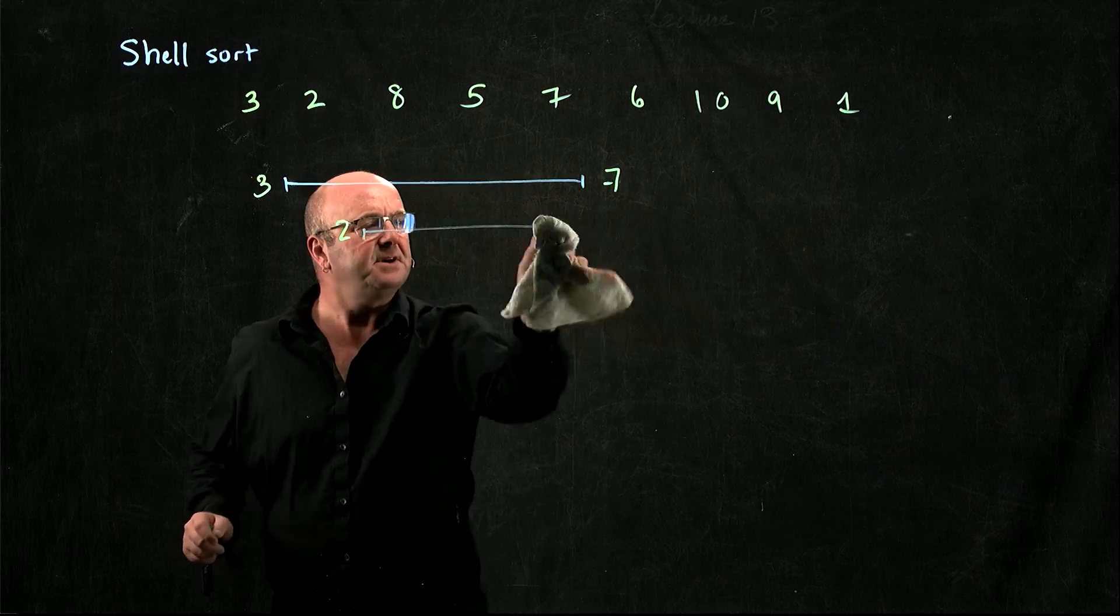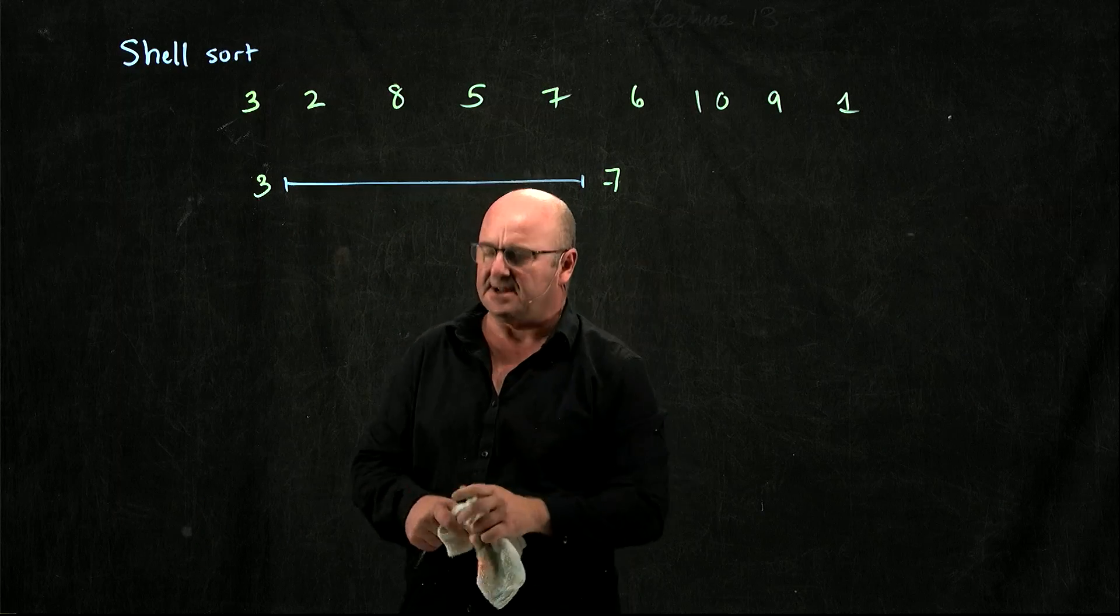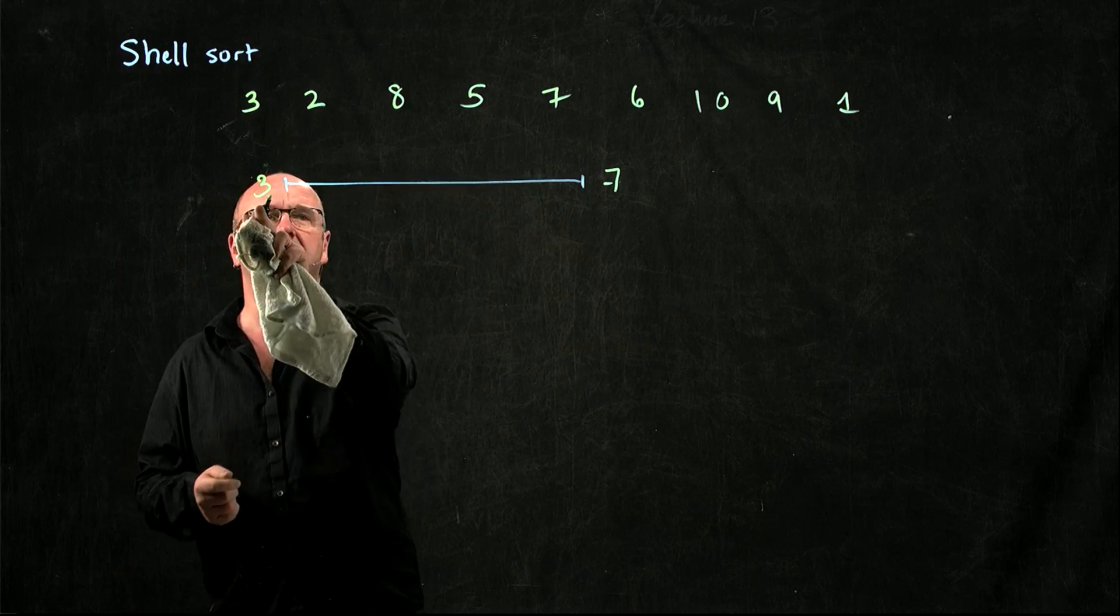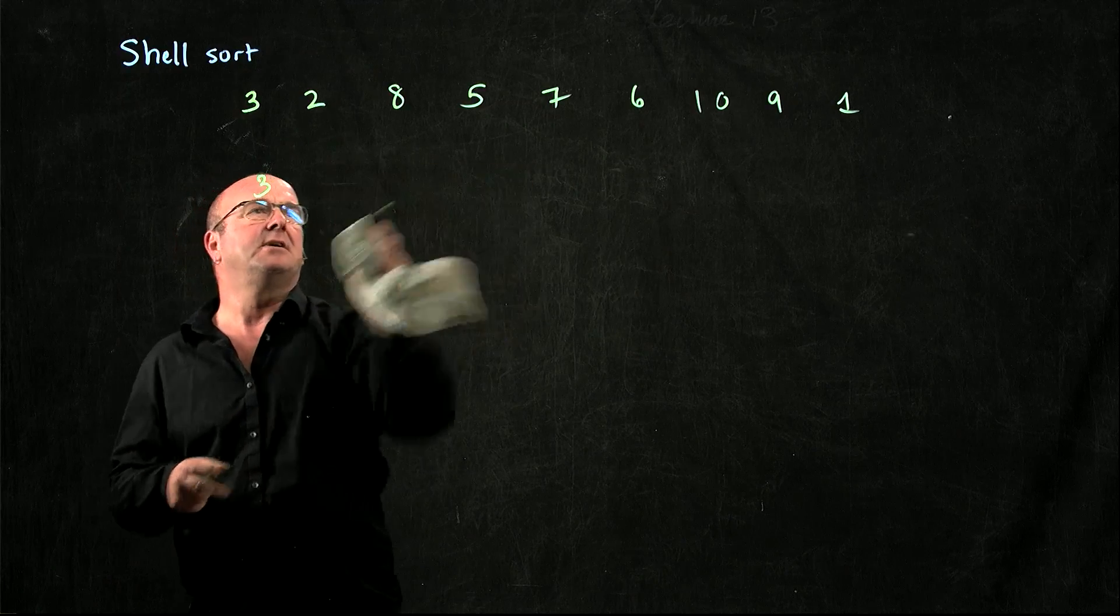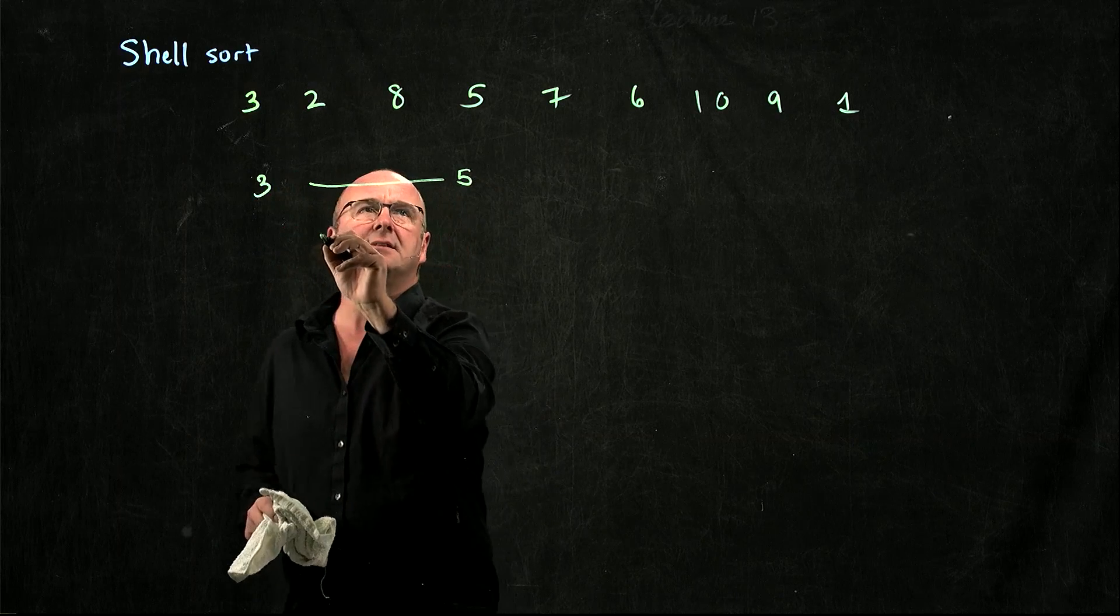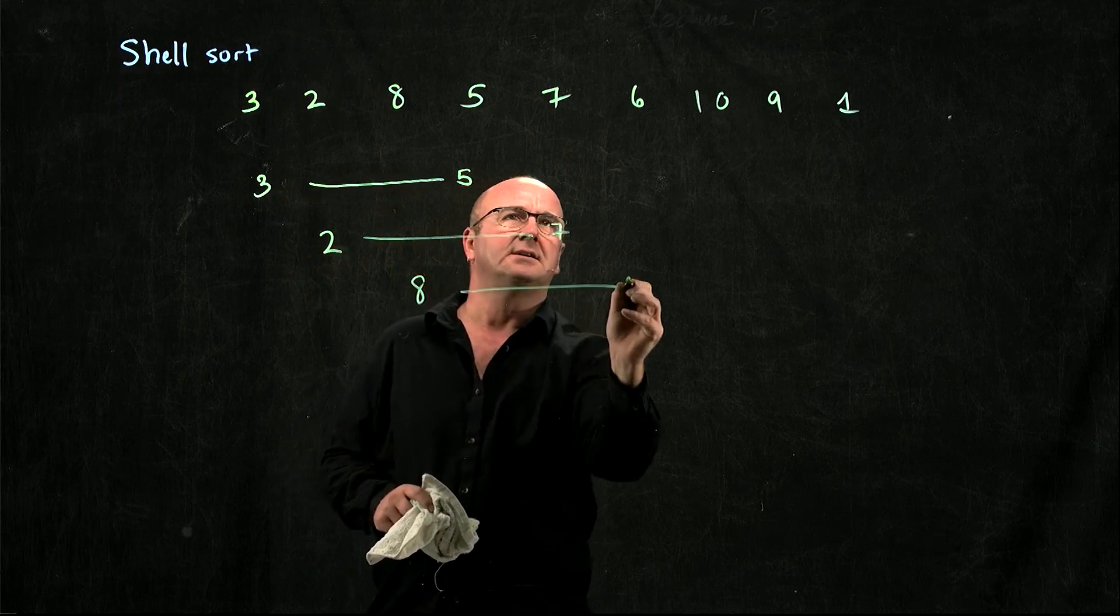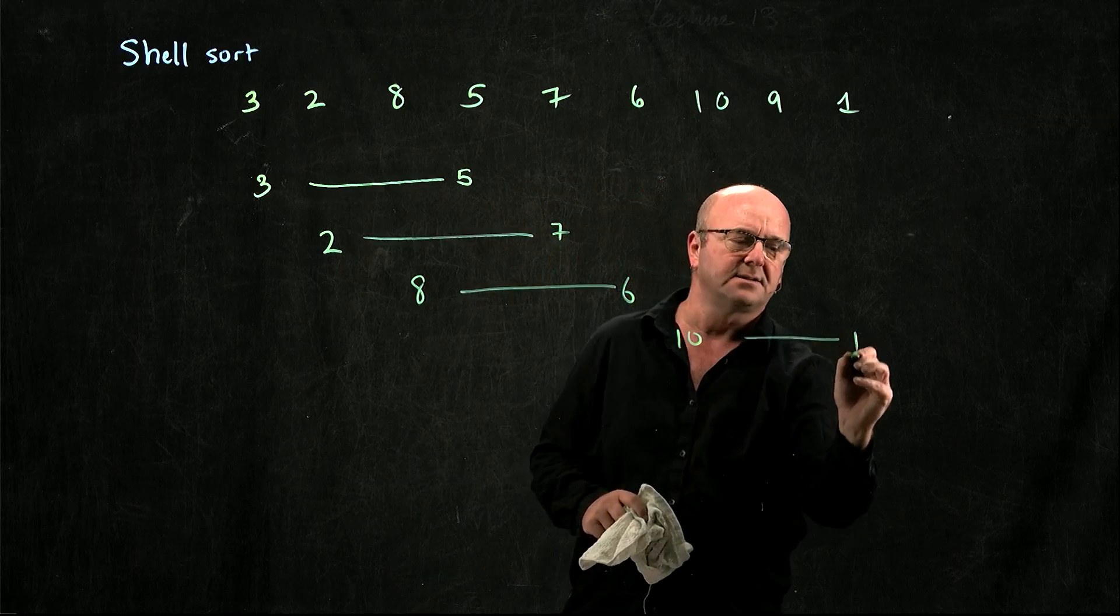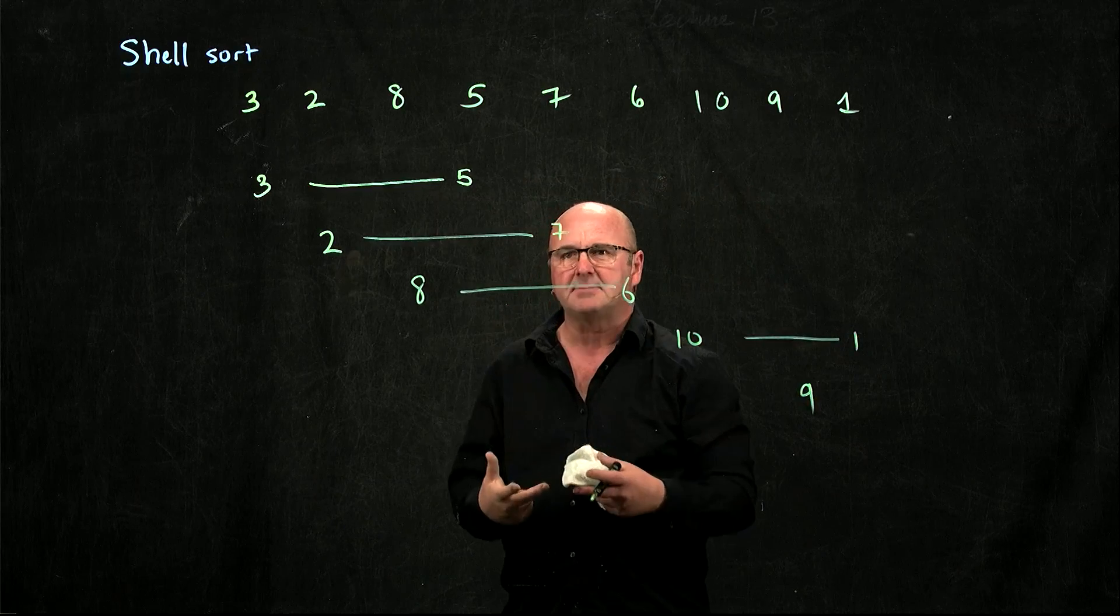Now in the first round, I took a gap of this length. In the second round, I take a gap of half the length. So I start with a 3, and this time I take a gap. Let's say I go to the 5. And so now I take the 2 to the 7, the 8 to the 6, the 10 to the 1, and the 9 on its own. So I've halved my gap size.